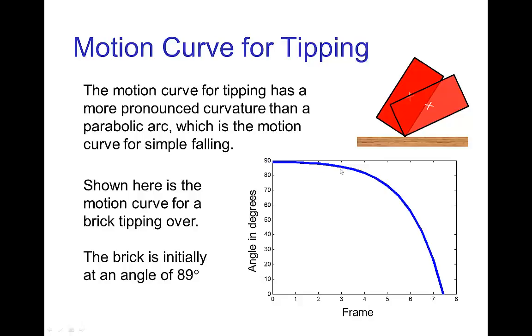We see that at first the brick hardly moves at all, so the angle changes very little. Here at the end is when the brick has fallen all the way over and hit the table. Halfway in time to when it's fallen over, it's not even turned ten degrees.